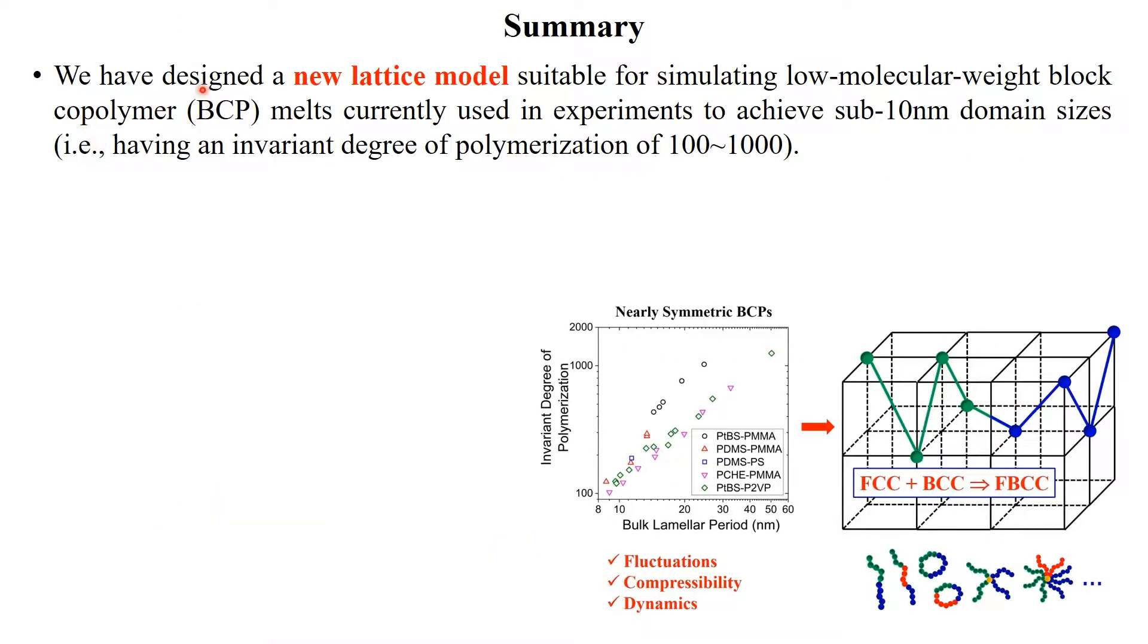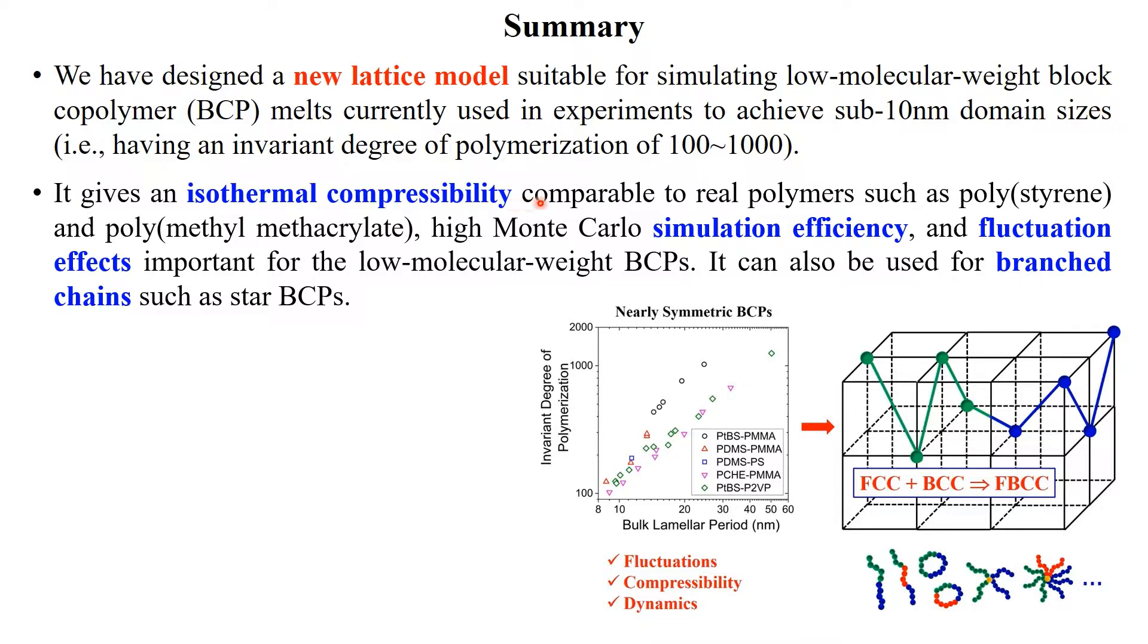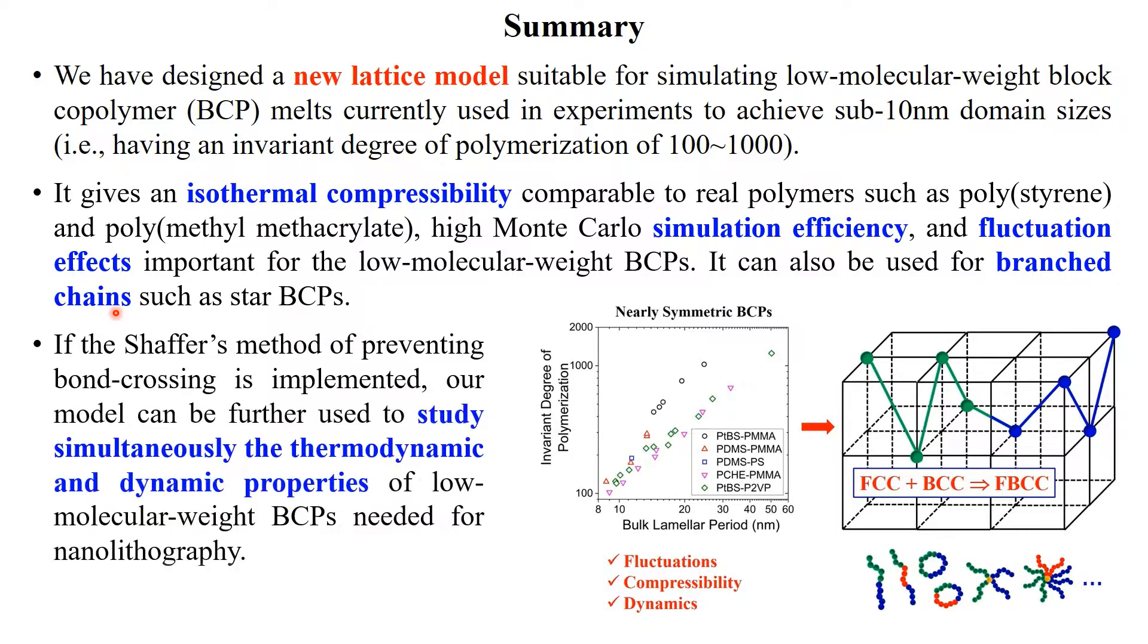To summarize, we have designed a new lattice model suitable for simulating low molecular weight block copolymers, currently used in experiments to achieve sub-10nm domain sizes. It gives an isothermal compressibility comparable to real polymers, high Monte Carlo simulation efficiency, and fluctuation effects important for the low molecular weight block copolymers. It can also be used for branched chains. Finally, if Schafer's method of preventing bond crossing is implemented, our model can be further used to study simultaneously the thermodynamic and dynamic properties of low molecular weight block copolymers needed for nanolithography. Thank you for your attention.